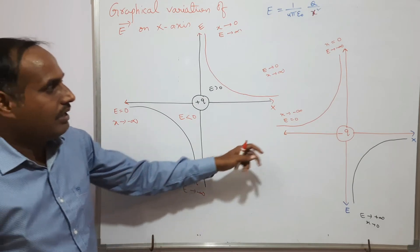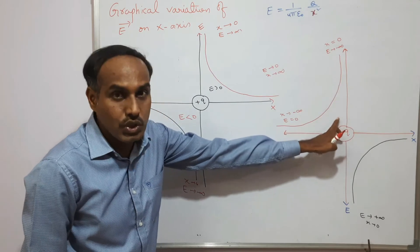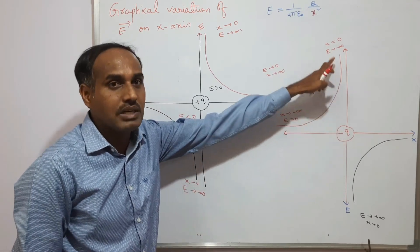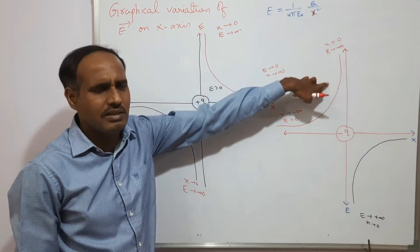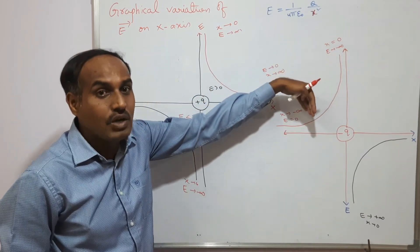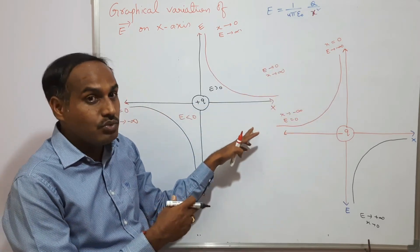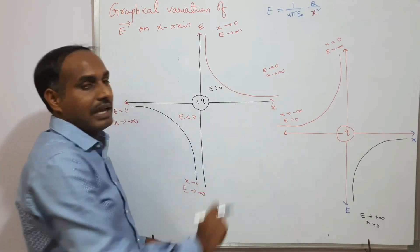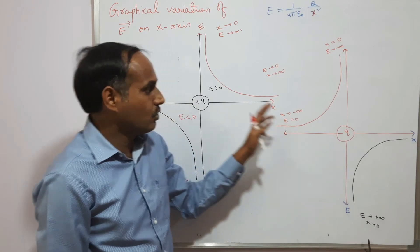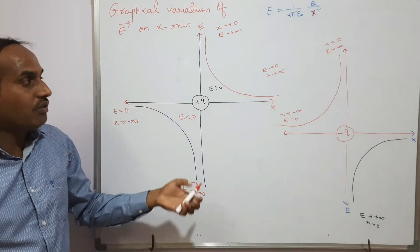This is the variation of electric field strength with position. At the point charge, x equals 0, we have the maximum electric field strength which is undefined. After that, the electric field strength starts to decrease and becomes 0 at an infinite distance — for both positive and negative charges. This is the graphical representation of electric field strength with position.